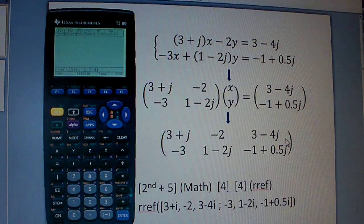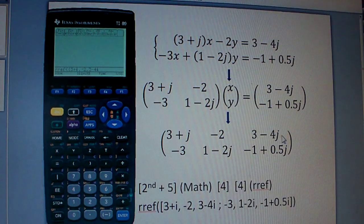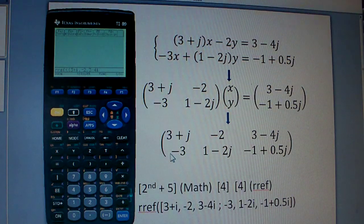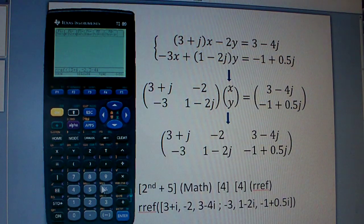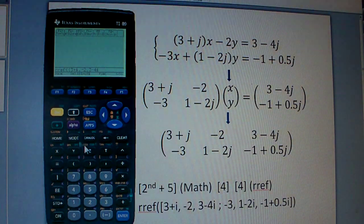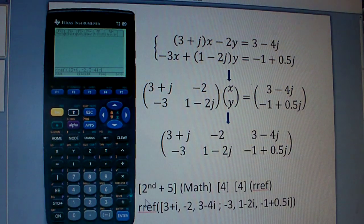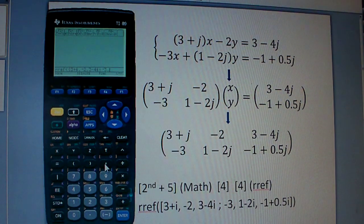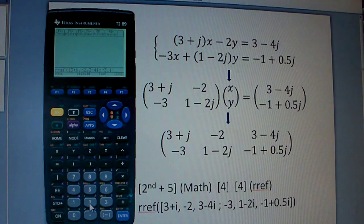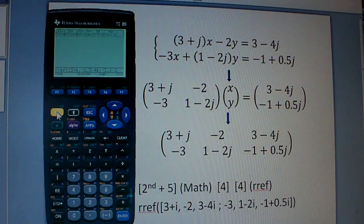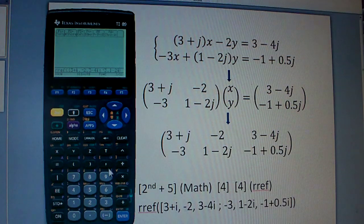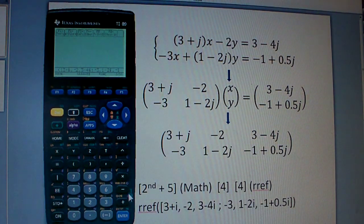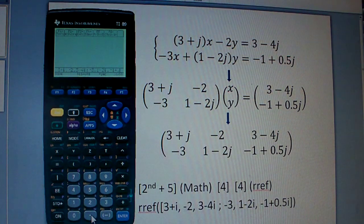And then once you're done with one of the rows, when you go to the next row, instead of using a comma, you should be putting a semicolon. And that's above number 9, so second 9, and then you put negative 3, comma, 1 minus 2 I, comma, negative 1 plus 0.5 I.